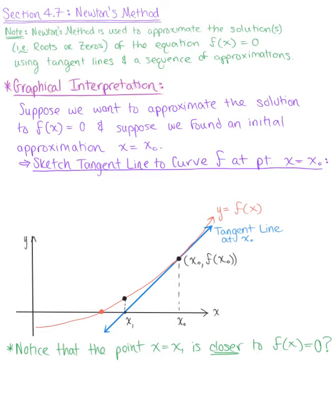In section 4.7, we are looking at Newton's method. To get us started, Newton's method is used to approximate the solutions — which are also our roots or zeros — of the equation f(x) = 0, by using tangent lines and a sequence of approximations.